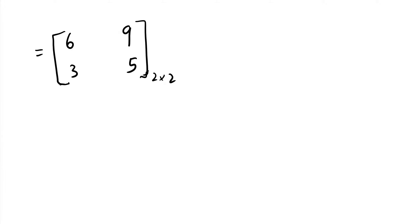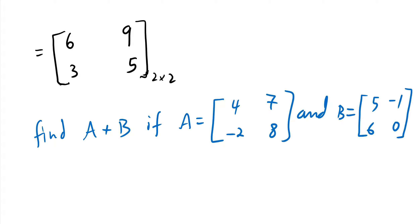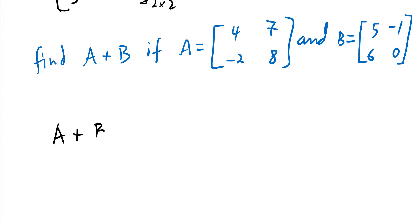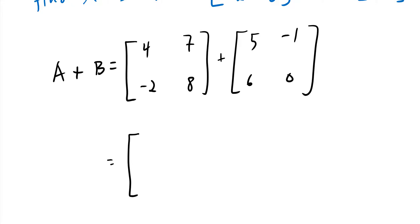The question can be asked in a slightly different way: find A + B if matrix A has entries [4, -2; 7, 8] and matrix B has entries [5, 6; -1, 0]. So A + B gives us: 4+5=9, -2+6=4, 7+(-1)=6, and 8+0=8. Very easy process.